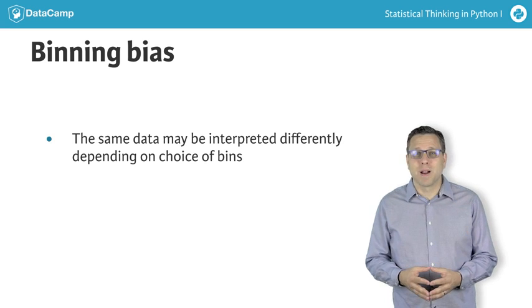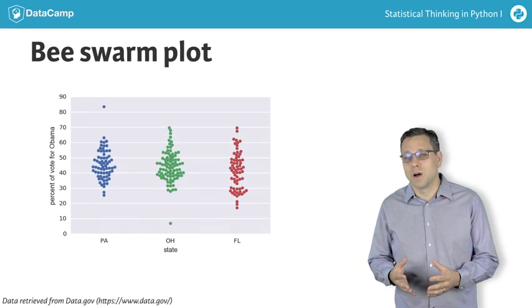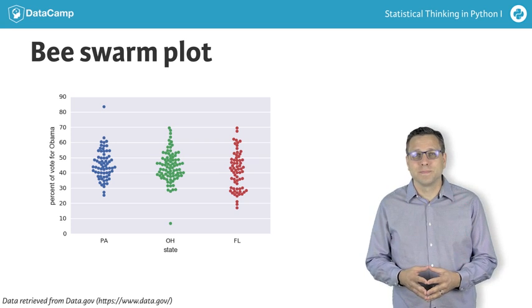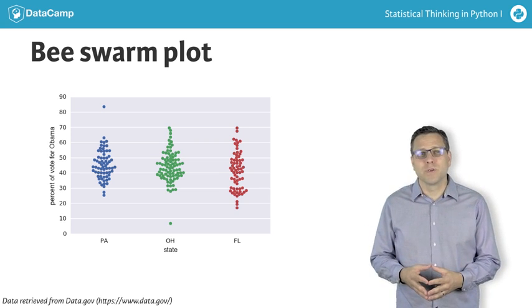To remedy these problems, we can make a beeswarm plot, also known as a swarm plot. This is best shown by example. Here is a beeswarm plot of the vote totals in the three swing states.